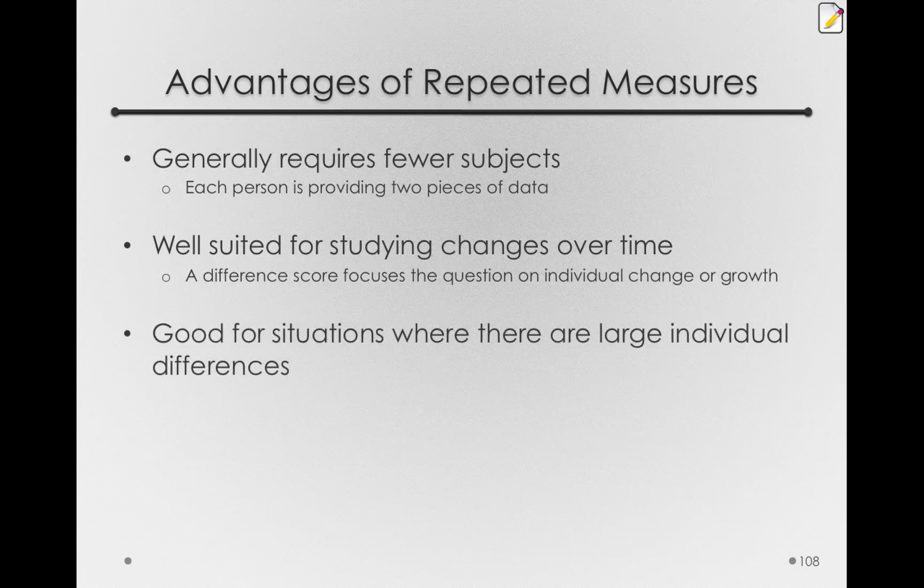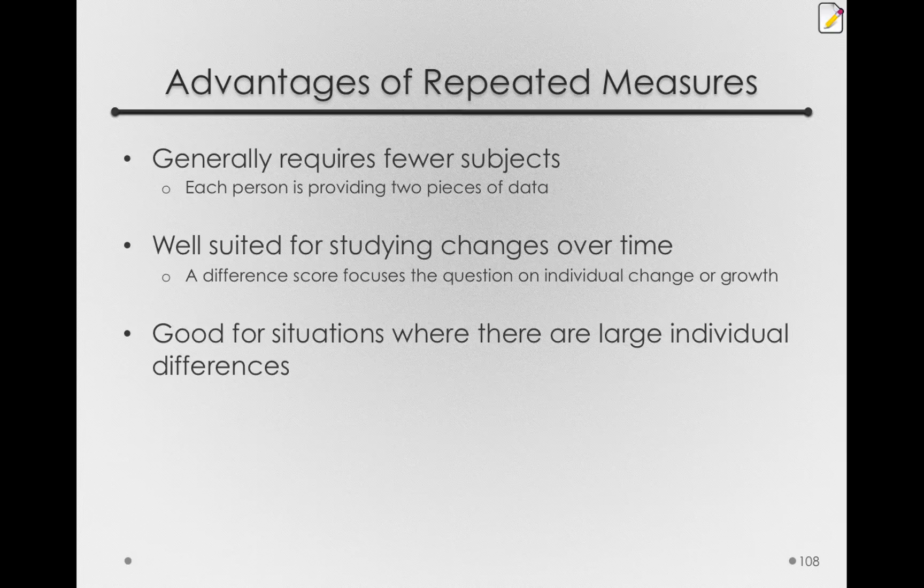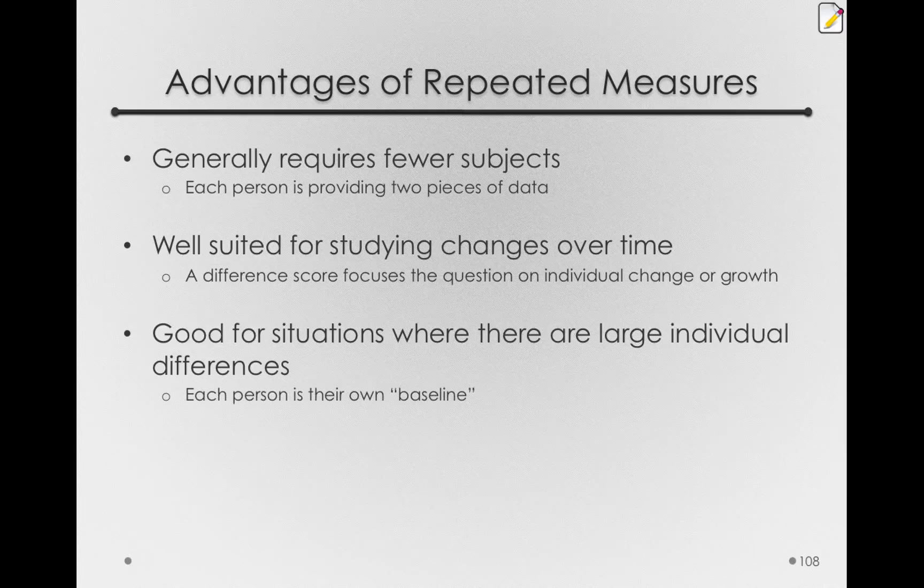Now, for a statistical consideration, repeated measures designs are good for situations where there are large individual differences. And by this, I mean that individuals differ a lot from each other. Blood pressure is a good example. IQ is another. Any situation where individuals differ a lot from another individual, a repeated measures design will actually yield better statistical results. Notice that each person in a repeated measures design acts as their own baseline.